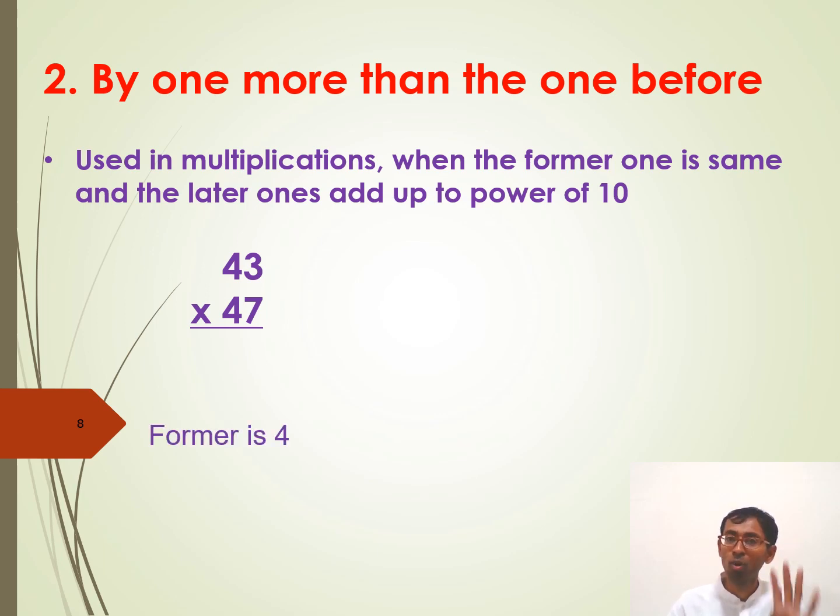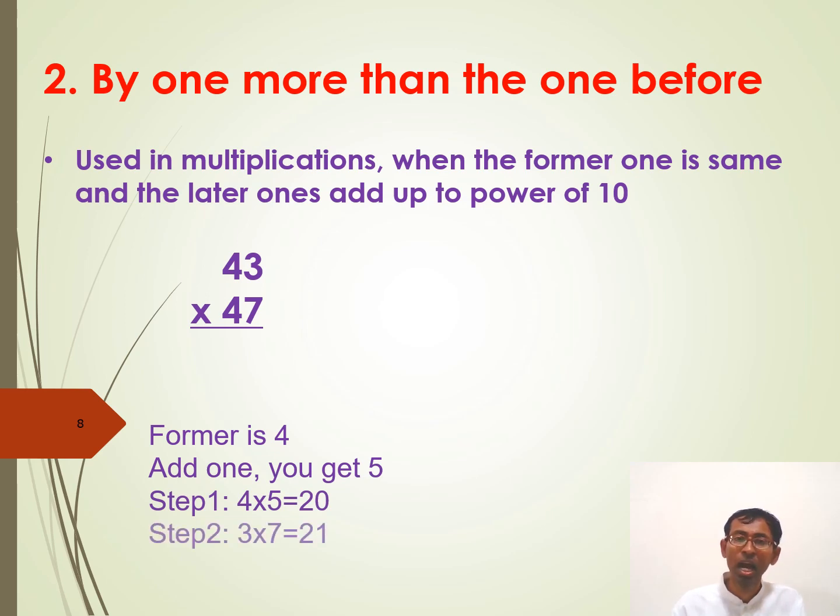Former one is four. One more than the former one is five. You just multiply four and five. You get the first part of the answer. That is twenty. And step two is simply multiply the latter ones. That is three and seven. Three times seven is twenty-one. As simple as that.